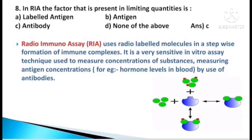In RIA, the factor that is present in limiting quantities is — options: labeled antigen, antigen, antibody, or none of the above. The answer is option C, antibody. The radio-immunoassay uses radio-labeled molecules in a stepwise formation of immune complexes. It is a very sensitive in-vitro assay technique used to measure concentrations of substances — measuring antigen concentrations, for example hormone levels in blood — by the use of antibodies.